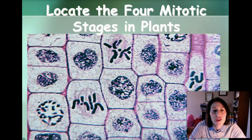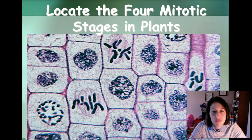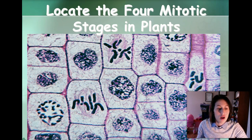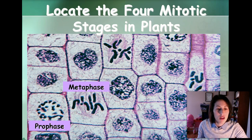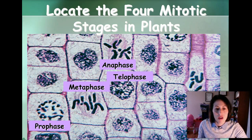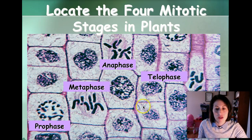On your own, pause this and locate the four mitotic stages that you see in these plant cells. Hopefully some of the ones that you identified: here's prophase, metaphase, anaphase where the chromatids are pulling apart, and telophase right here.